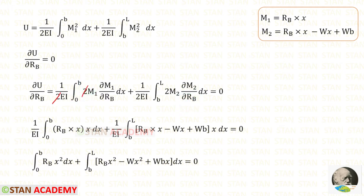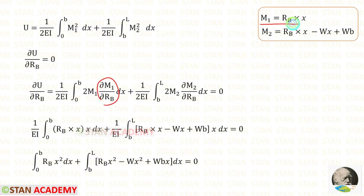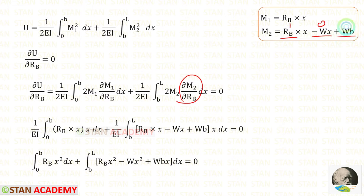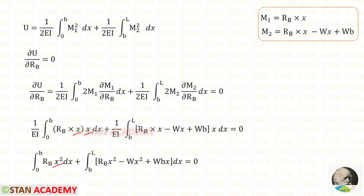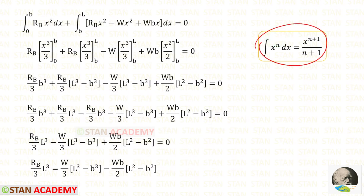We can eliminate the factor of 2 from both terms. Let us apply the values of M1 and M2. Differentiating M1 with respect to RB gives 1, and there is no RB in the WB term so that contributes 0. Thus 1 × X gives X. The factor 1/EI is common and can be taken to the other side. Expanding: X × X = X², and the remaining products also give X² and WBX terms.